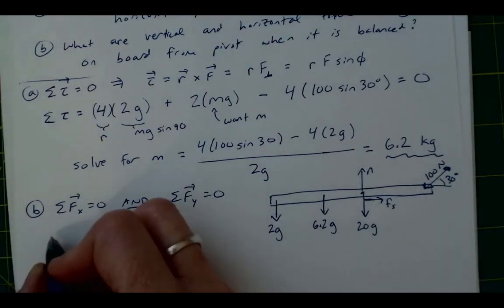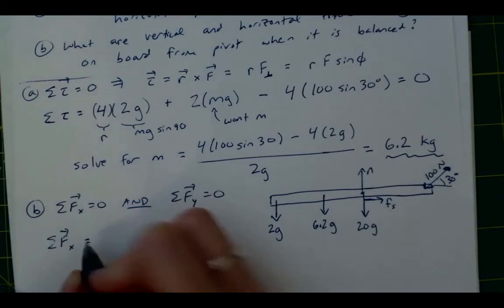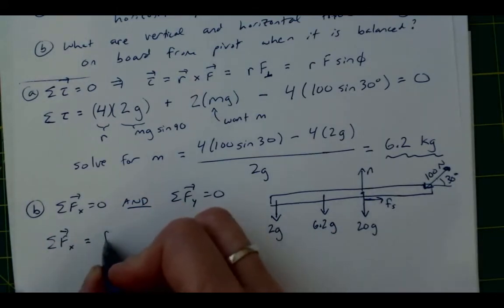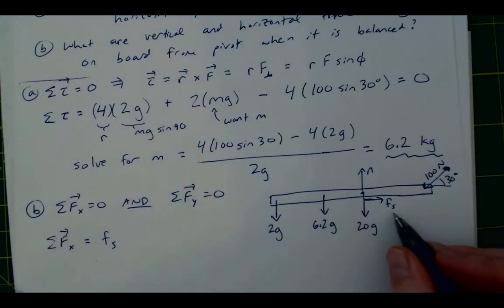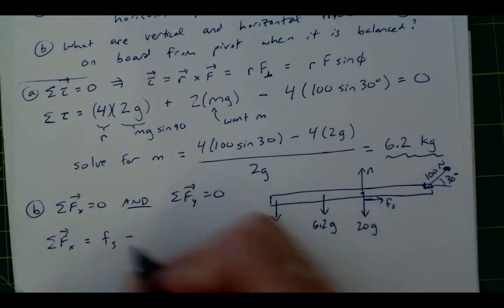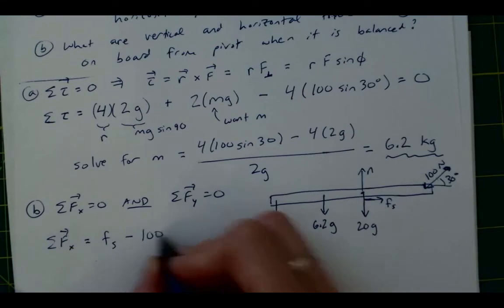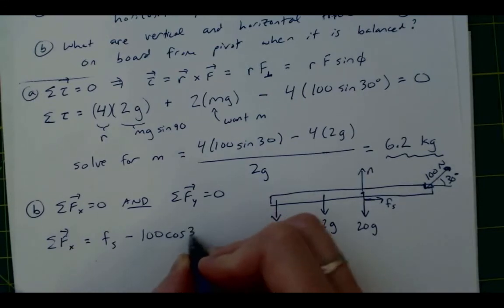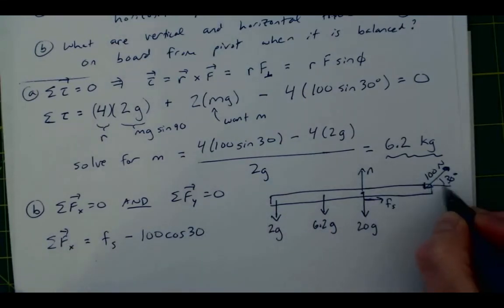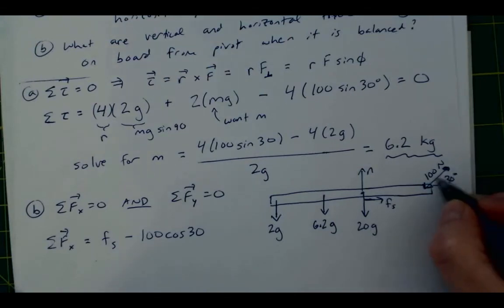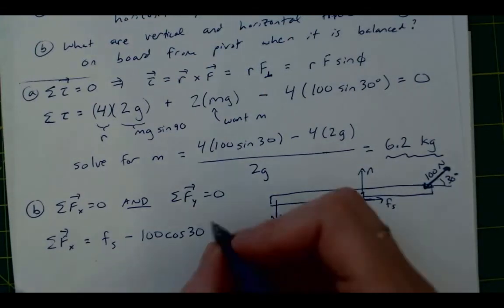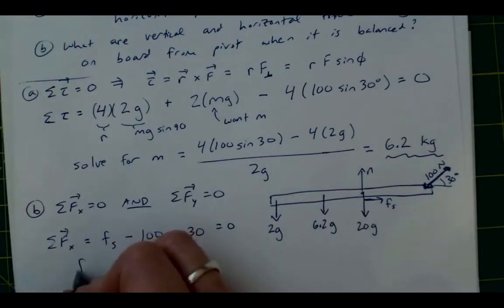Okay, so we can start with the sum of forces in x, which are gonna be equal to the force of static friction, which is one of the things that we want, minus 100 times the cosine of 30 degrees. And again, that's this horizontal component of this 100 newton force that's acting. And that's gonna be equal to zero.